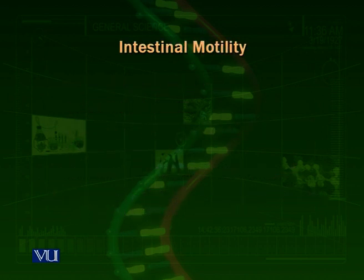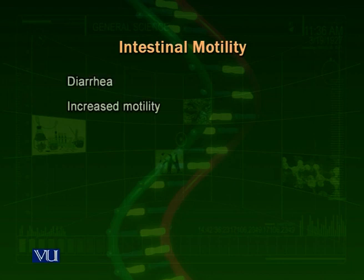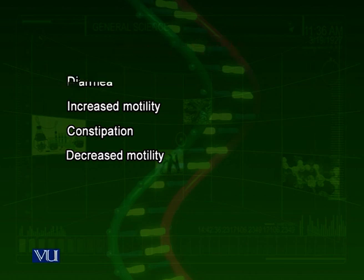Now there are two related problems of intestinal motility, particularly related to the large intestine, that we normally experience: diarrhea and constipation. We know that the function of the large intestine is the absorption of water from the food. If the motility in the large intestine is increased — that is, it is contracting and relaxing at a greater speed — then the result is diarrhea. When food passes faster than normal speed, the intestine cannot absorb enough water, resulting in loose feces with more water.